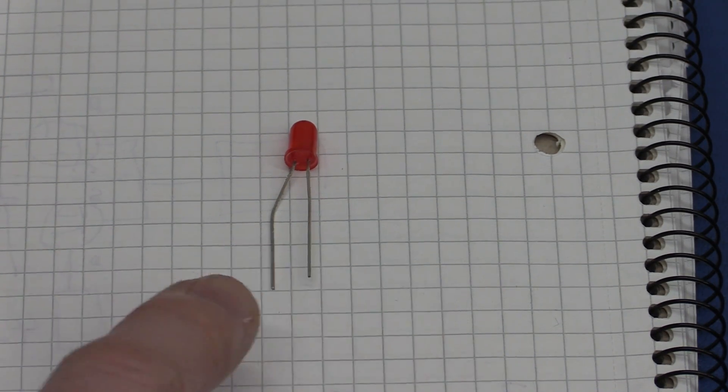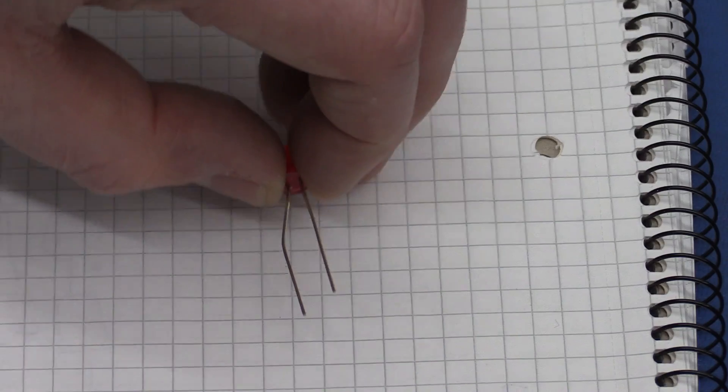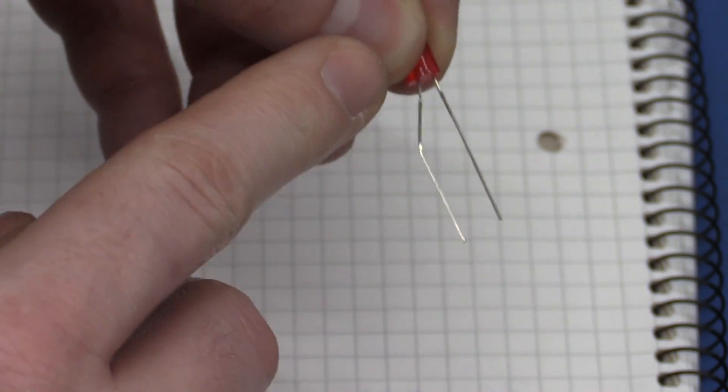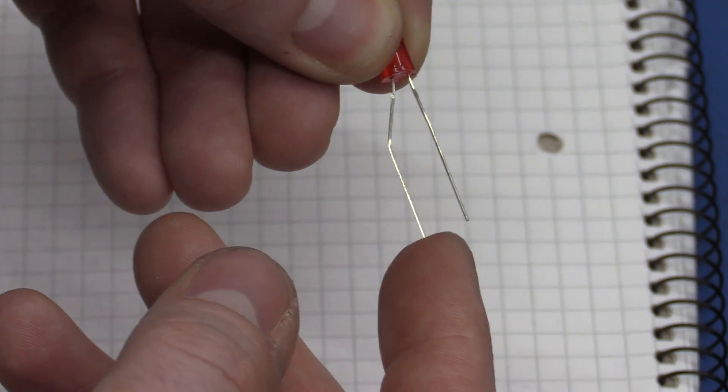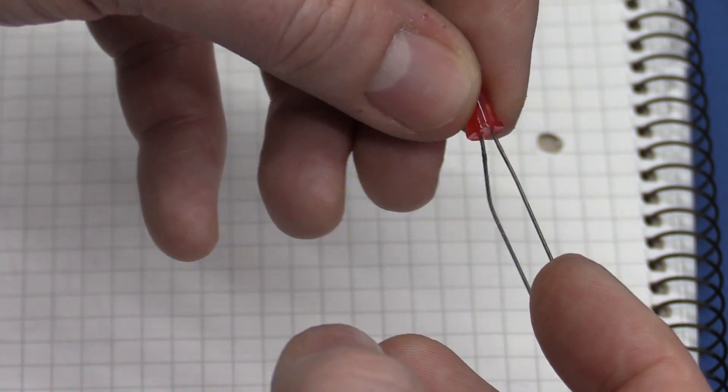So just so everybody can follow here, this is a standard through-hole LED and we have the anode here as the long leg, this is the positive lead and the cathode is the short lead which is the negative.